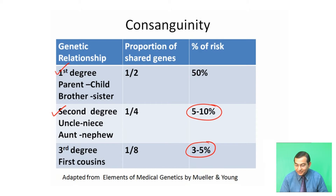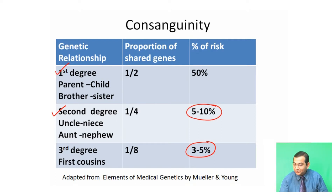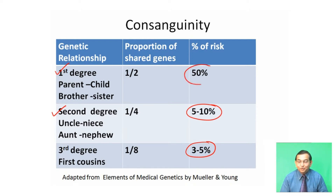So first degree marriage, that is parent-child, which is called incestuous, carries the highest risk — fifty percent — of appearance of recessive characters. This also applies to marriage between brother and sister.